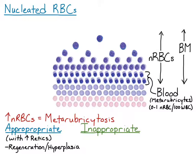Inappropriate metarubrocytosis is when there are either normal or decreased numbers of reticulocytes. That means the metarubrocytosis is not due to erythroid hyperplasia and we have to find another reason for the inappropriate metarubrocytosis.